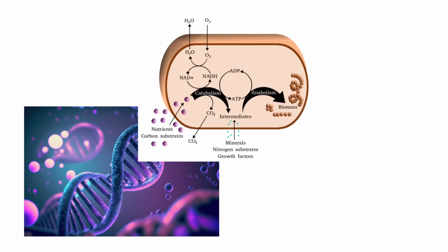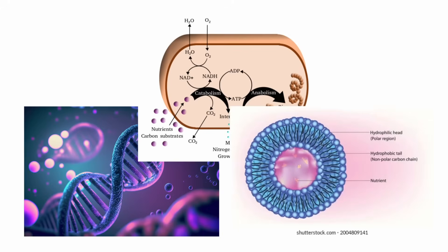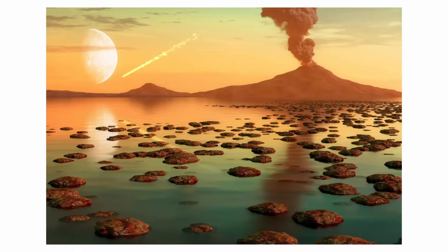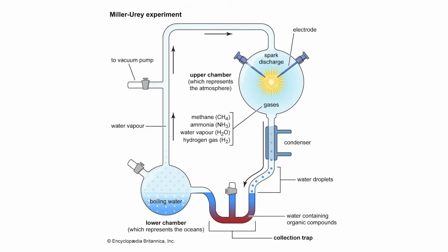The third fundamental building block of life is some kind of membrane that allows all of these chemical reactions to be contained within a manageable space. So how did these three fundamental building blocks of life come about on Earth, starting from just dead chemicals? Amino acids and simple RNA can come about very easily in the conditions of ancient Earth. This was proved, for example, in the Miller-Urey experiment, where they electrified a bunch of boiling water and ammonia and resulted in a bunch of amino acids.